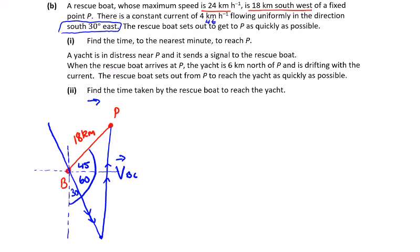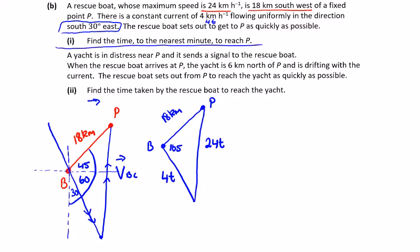I'm just going to sketch that triangle again. I have my 18 kilometers, my 105 inside, my point P, my point B, my 105. The boat max speed is 24, so over here I can call this one 24t in terms of distance, 4t is the current. Find the time to the nearest minute to reach P.